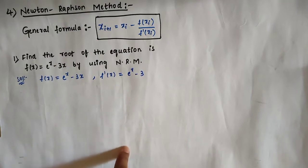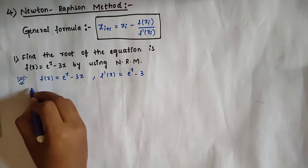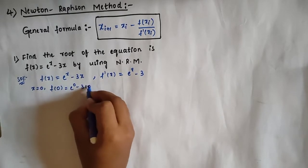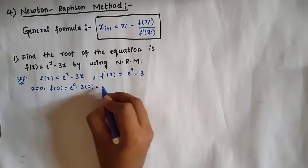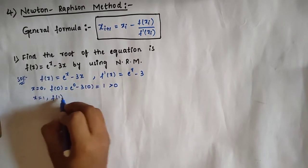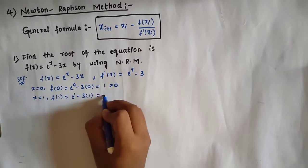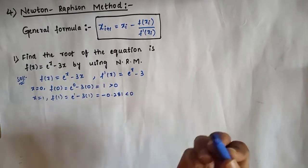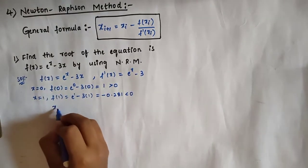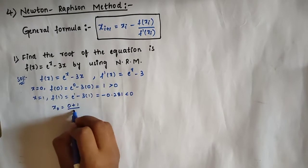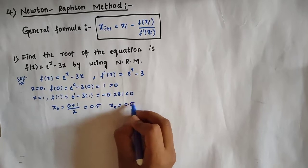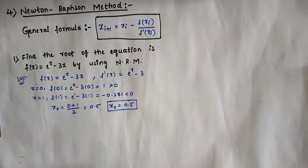We need to find one value where f is less than 0 and another where f is greater than 0. By putting x = 0: f(0) = e^0 minus 3×0 = 1, which is greater than 0. By putting x = 1: f(1) = e^1 minus 3×1 = minus 0.281, which is less than 0. Since we got one positive and one negative, we take the average: (0 + 1)/2 = 0.5. So our x₀ value is 0.5.